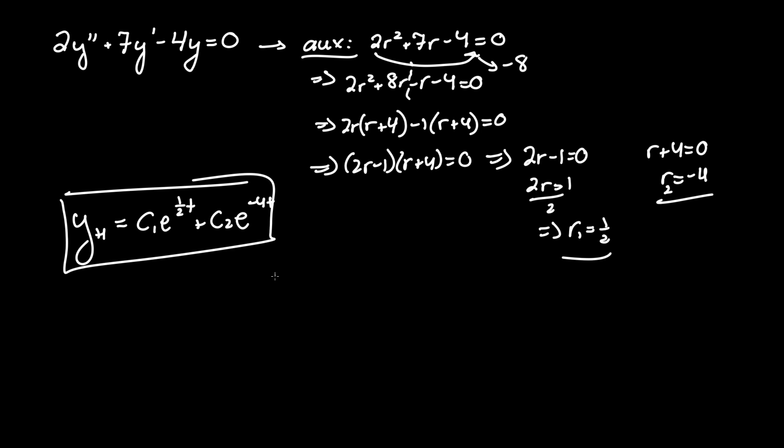Because if r1 and r2 are not equal, then it would take format yh equals c1e to the r1t plus c2e to the r2t. And that follows this pattern. So there we have our answer. If you have any questions, please leave in the comments below, and good luck.